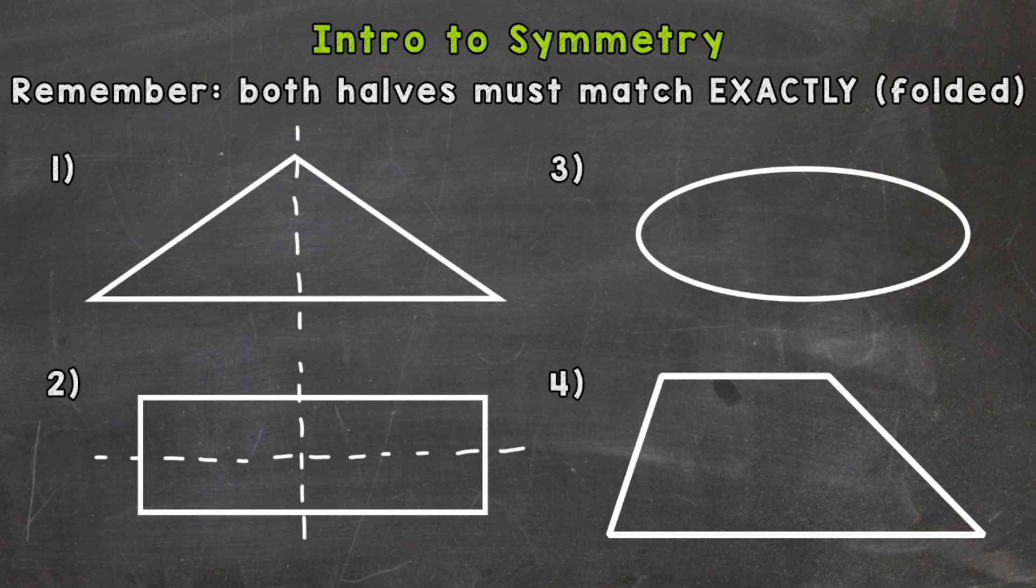On to number three here where we have an oval. This one has two lines of symmetry. We can go vertically and cut it in half.